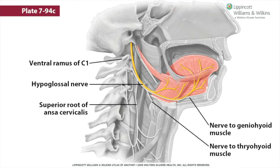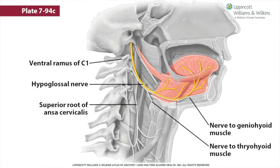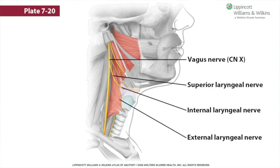The superior laryngeal nerve, a branch of the vagus nerve, bifurcates into the internal and external laryngeal nerves. Both descend into the carotid triangle on their way to their targets. The internal laryngeal nerve pierces the thyrohyoid membrane with the superior laryngeal artery. The external laryngeal nerve leaves the carotid triangle, pierces the inferior pharyngeal constrictor muscle, and enters the cricothyroid muscle. These nerves will be discussed further in the Solid Anatomy lecture on the larynx.